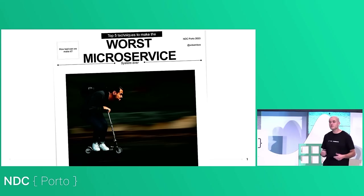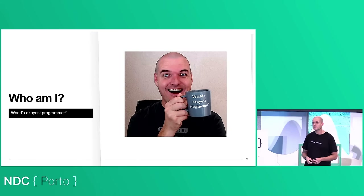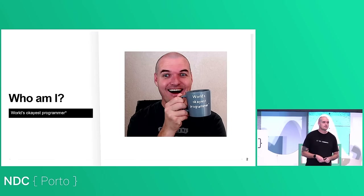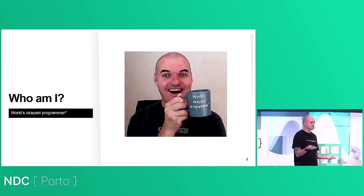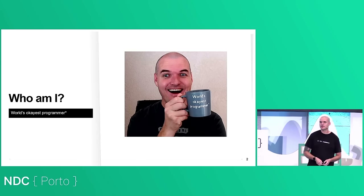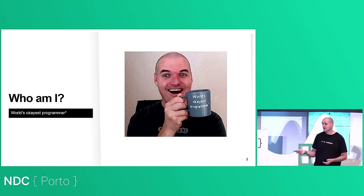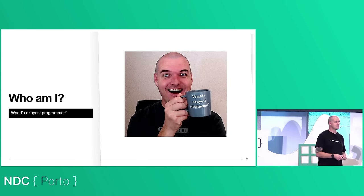So who am I, and why am I qualified to talk to you about building bad systems? My name is William Brander. My friends call me William, and since we've known each other for so long, we're all friends here, so you also get to call me William. As you can see from the mug, I am the world's okayest programmer.